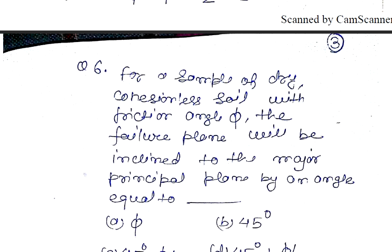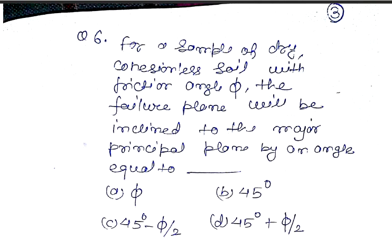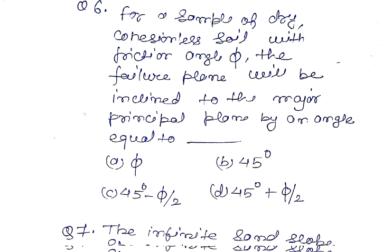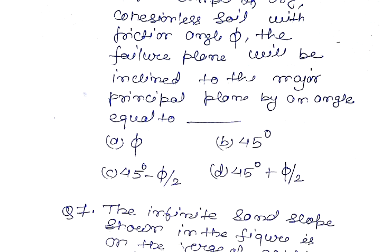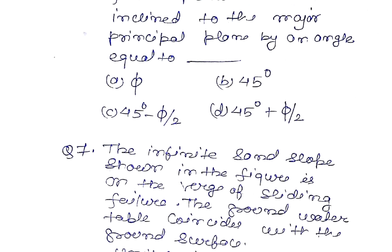Question number 6. For a sample of dry cohesionless soil with friction angle phi, the failure plane will be inclined to the major plane by an angle equal to: phi, 45 degrees, 45 degrees minus phi by 2, or 45 degrees plus phi by 2.